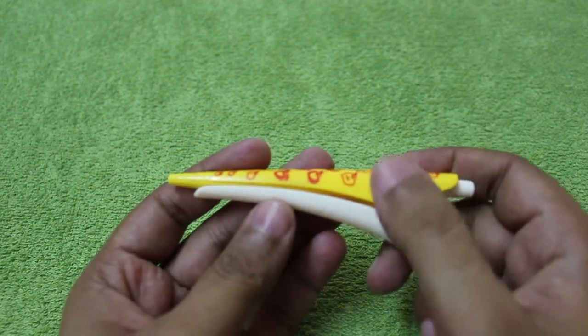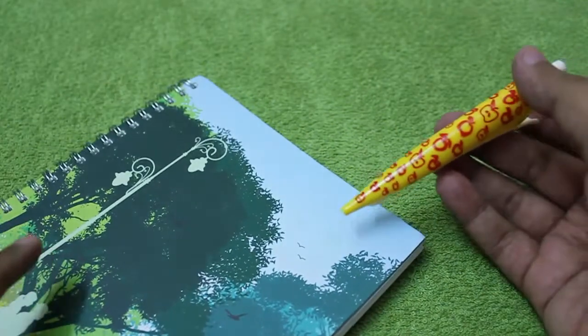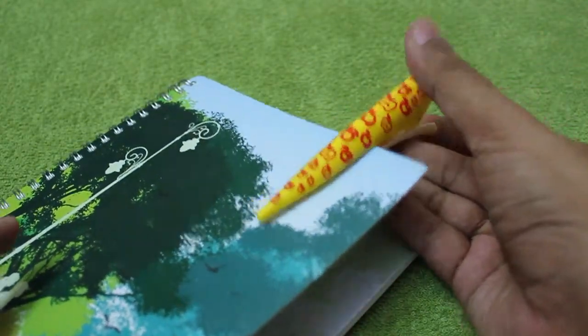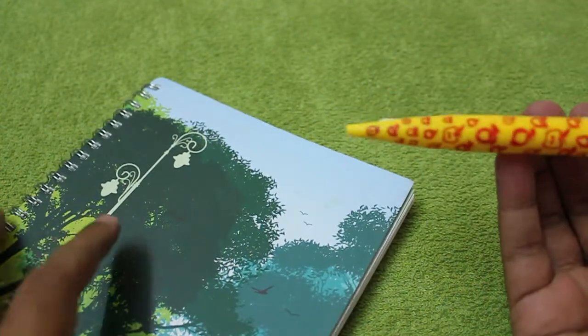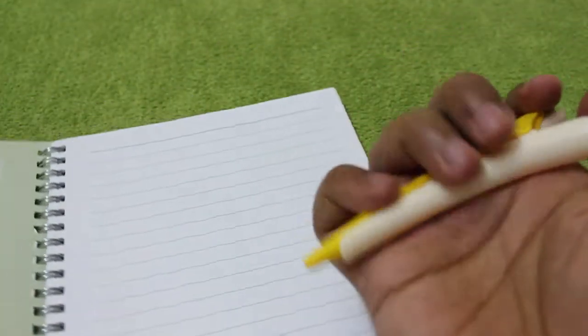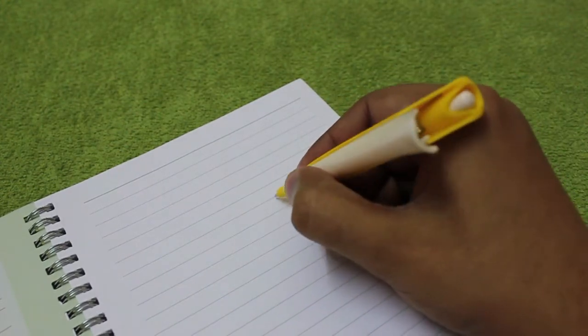When you open the clip, it closes automatically. As you can see, when you clip it, it closes. You can clip it anywhere. When you need the pen, just press it and the pen pops out.